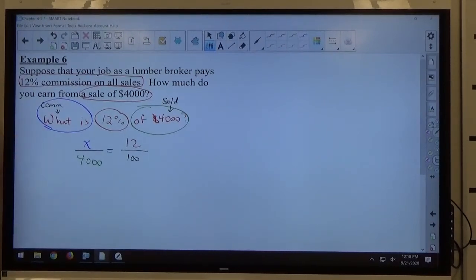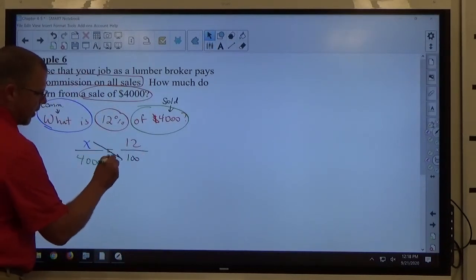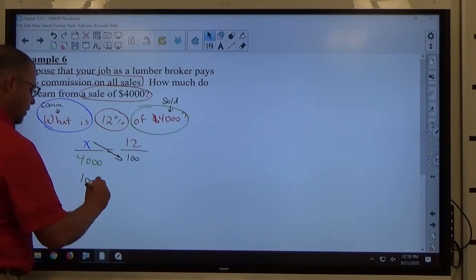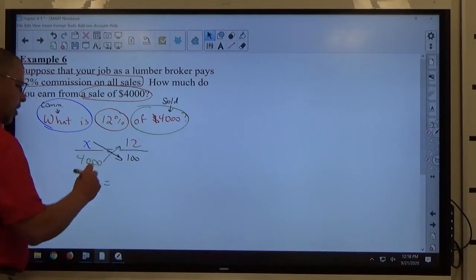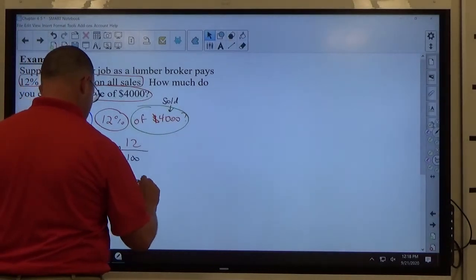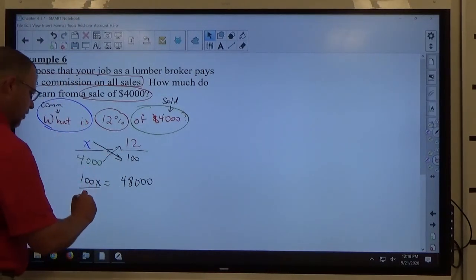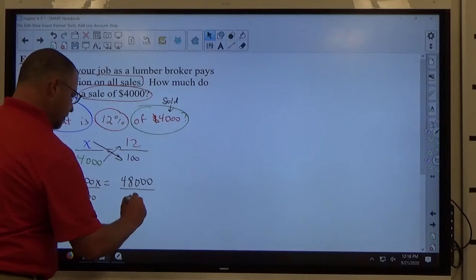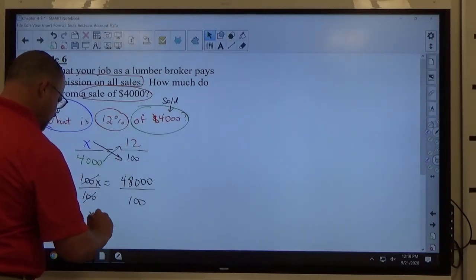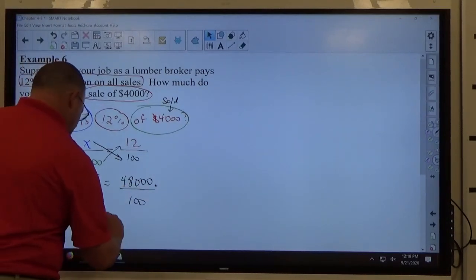Once we create the correct proportion, now we cross multiply. X times 100 is 100X. 4,000 times 12 is 48,000. We divide both sides by 100. And again, there's a decimal point right here, dividing by 100 slides it two to the left, so that gets to be $480.